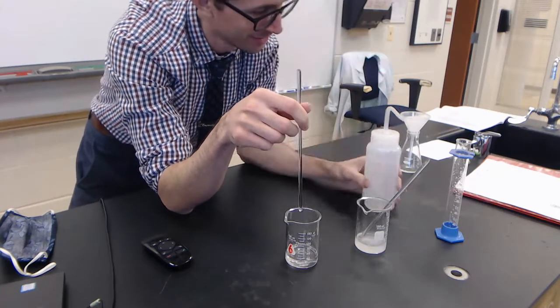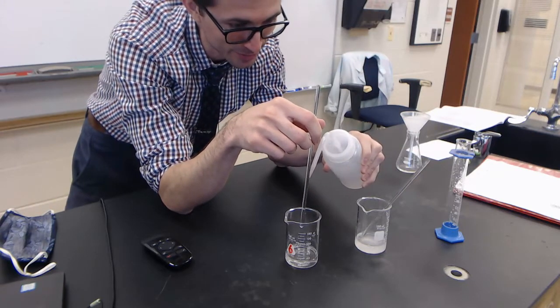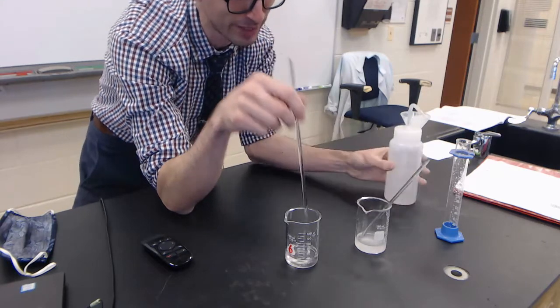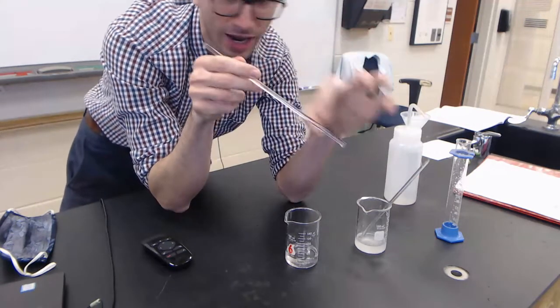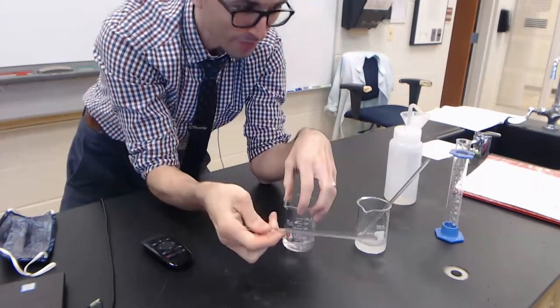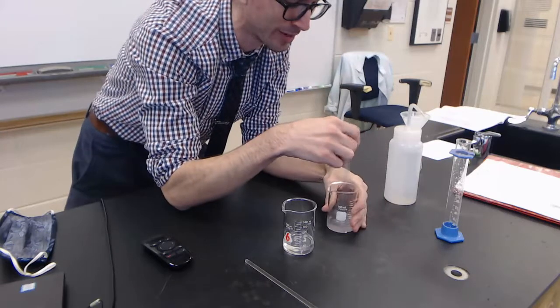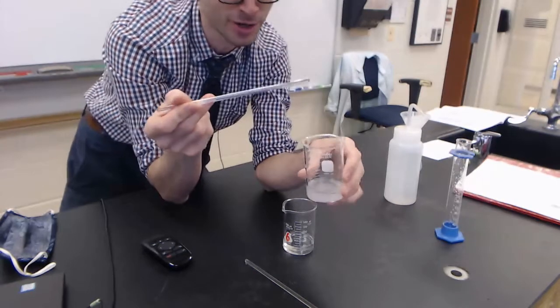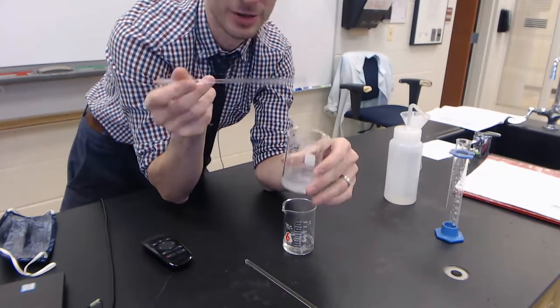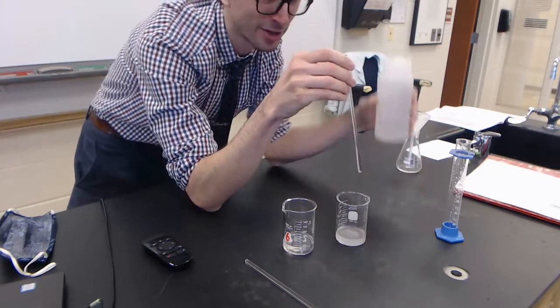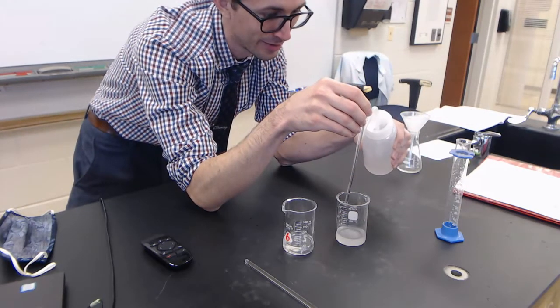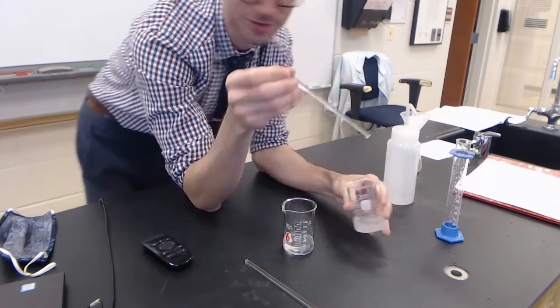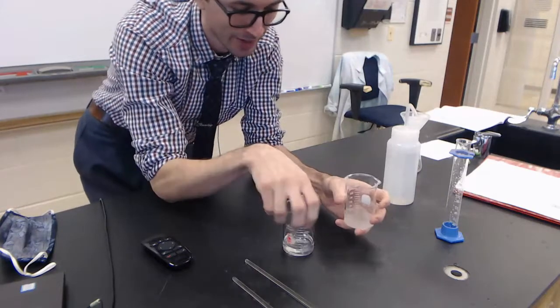What I like to do is squirt some of the distilled water down the stirring rod, and what that does is it makes all of those extra ions that were on the stirring rod now in my beaker. A lot of people think there's nothing on the stirring rod because it's clear and colorless, but there is. Just because something's clear and colorless doesn't mean that it's not there. The water doesn't screw anything up because I added water to it anyways.